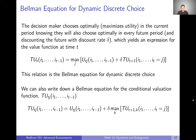We assume the decision maker is rational and has perfect information, so they choose optimally — maximizing utility in the current period, knowing they will also choose optimally in every future period. They also discount the future with a discount rate of delta. That gives us an expression for the value function at time T: it's the maximum of utilities in time period T plus this discounted future total utility of the next time period, conditional on the choice made in this time period.